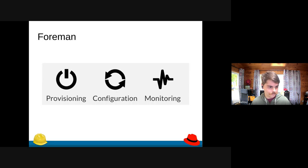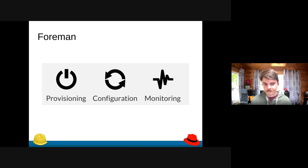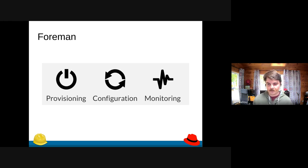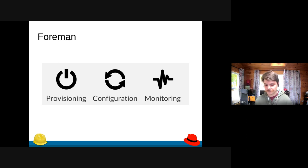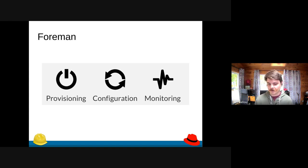Katello is a plugin to a project called Foreman, and what Foreman does by itself boils down to three things: provisioning, configuration management, and monitoring for your hosts. If you need to manage many computing machines — whether VMs, physical hosts, or whatever — Foreman is a single interface where you can install operating systems, use Ansible or Puppet for configuration, and monitor their health.